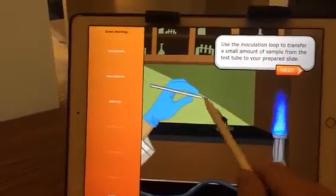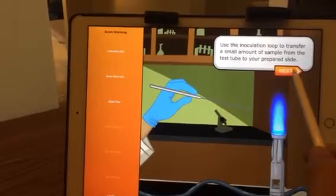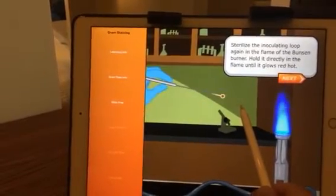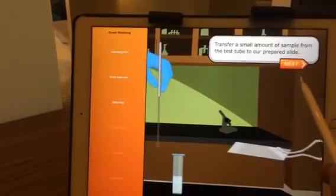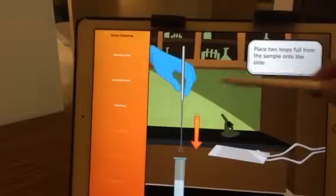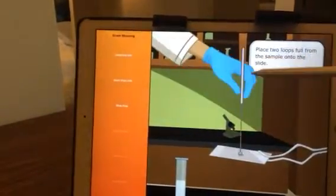Use the inoculation loop to transfer a small amount of sample. Sterilize the inoculating loop again in the flame of the Bunsen burner. Hold it directly in the flame. Transfer a small amount of sample from the test tube to our prepared slide. Place two loops full from the sample onto the slide.